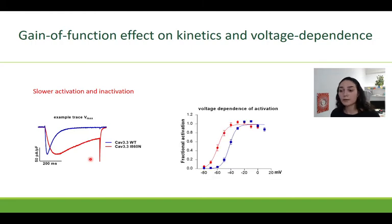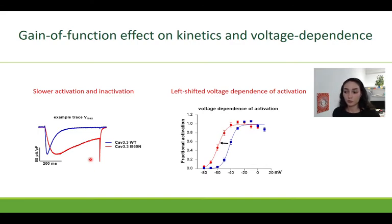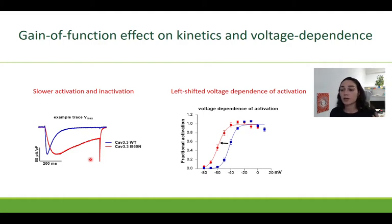Another gain-of-function effect that we found was the left shift of the voltage dependence of activation to potentials even closer to the resting membrane potential of nerve cells, meaning that they respond to lower depolarizations and therefore have an increased excitability. And we see the same for the other three mutations.